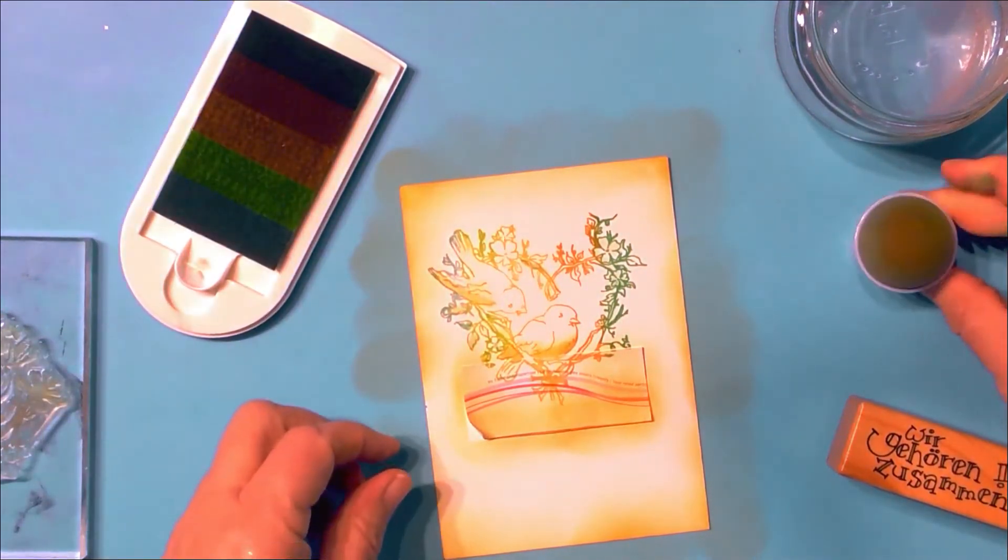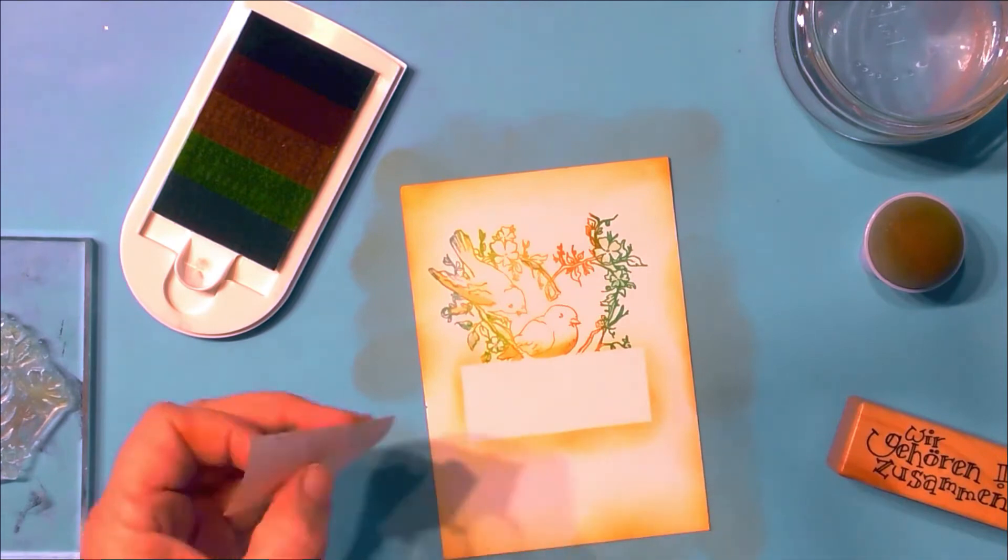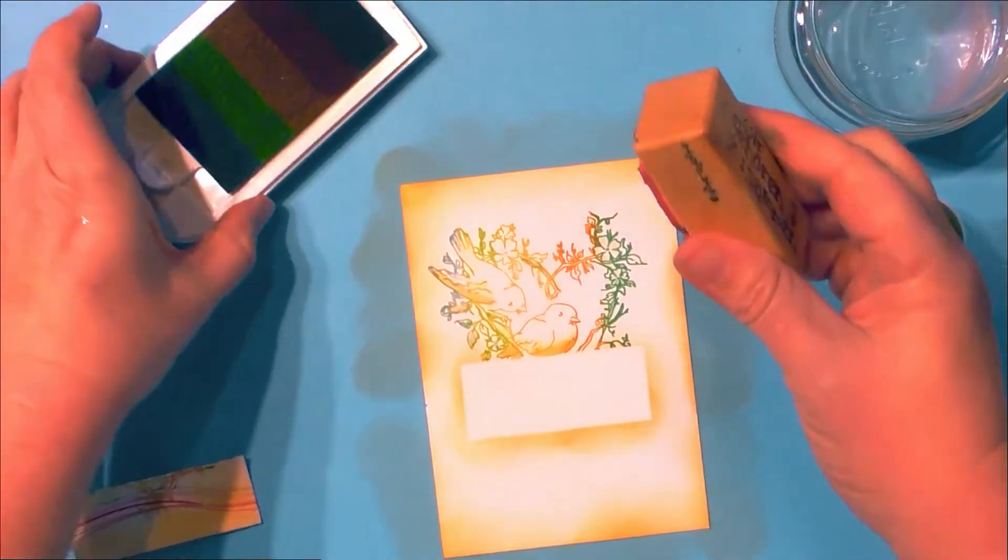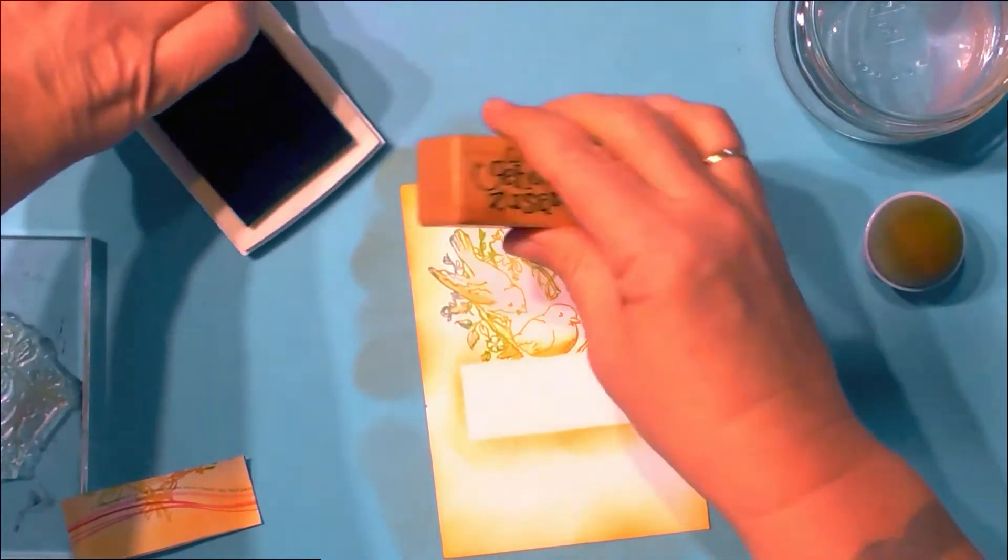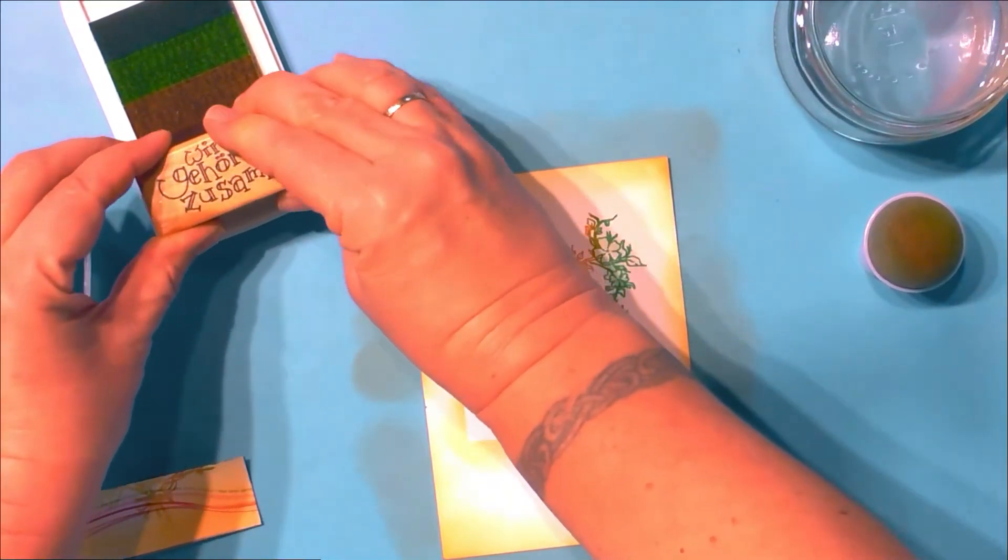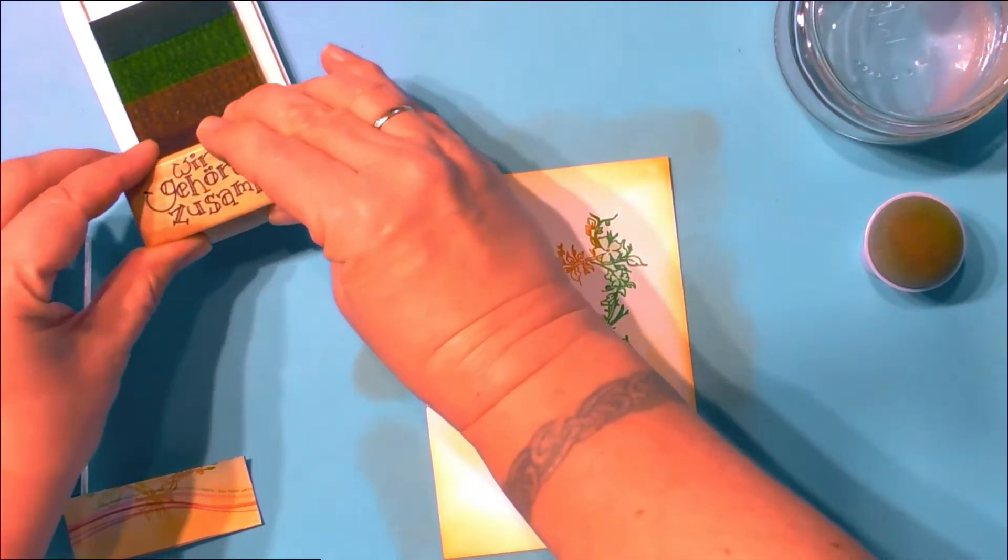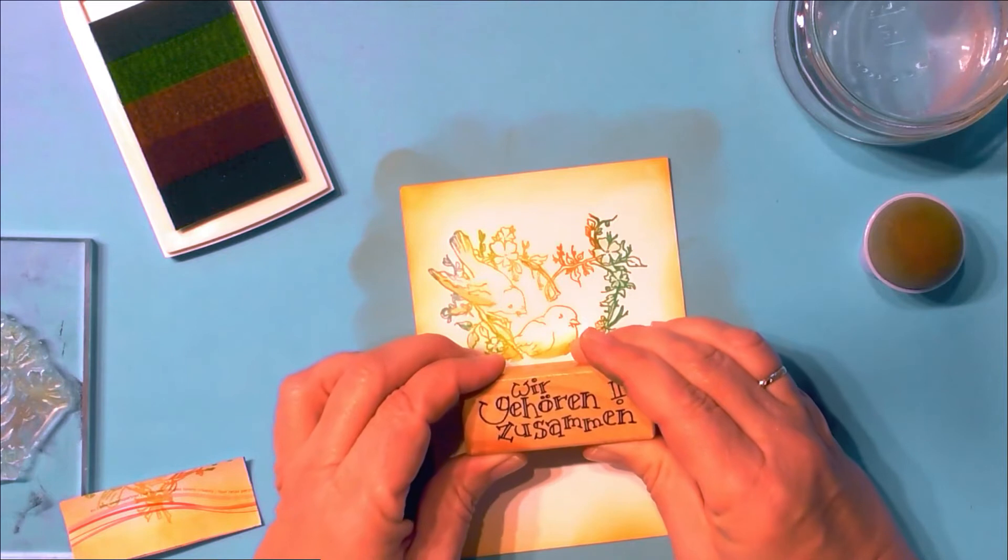Now pull off the post-it note and as you can see, you have created a kind of shadowy look for the sentiment we will stamp now. Stamp it into the center of your rectangle.